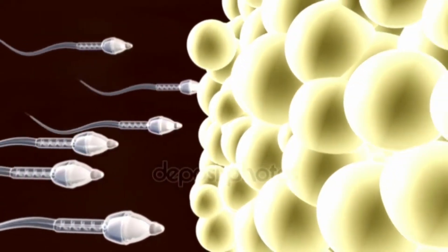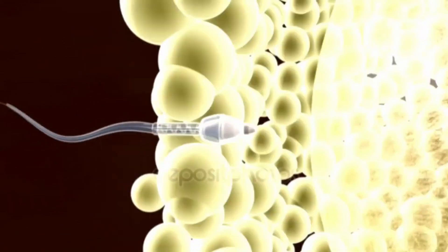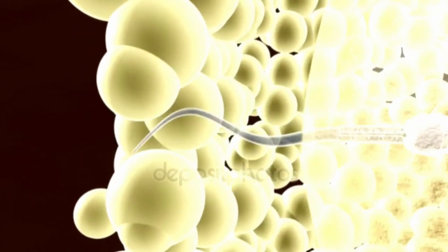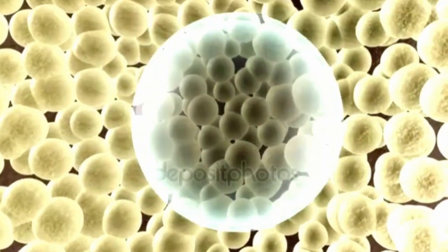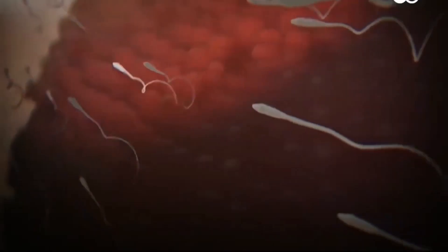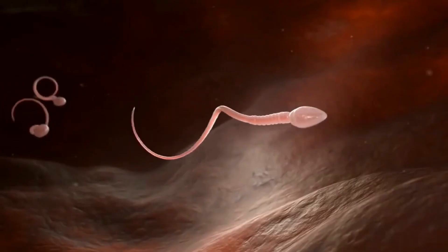During this part of the journey, many chemicals in the reproductive tract cause the membranes covering the heads of the sperm to change. As a result, the sperm become hyperactive, swimming harder and faster toward their destination.